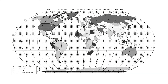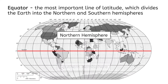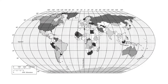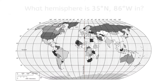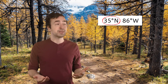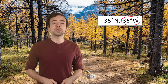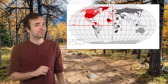Notice the lines on the map — these are latitude and longitude lines. Latitude lines run east to west. The equator is the most important line of latitude because it divides the Earth into the northern and southern hemispheres. Longitude lines run north to south. The prime meridian is the most important line of longitude, dividing the Earth into the eastern and western hemispheres. Looking at the coordinates 35 degrees north, 86 degrees west — north tells us latitude, west tells us longitude — so I'm in the northwestern hemisphere.